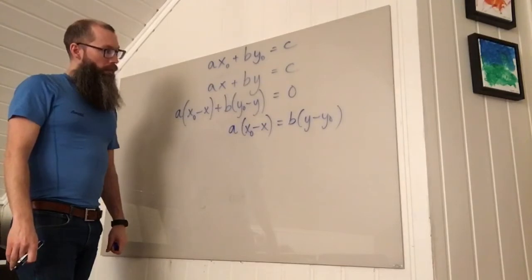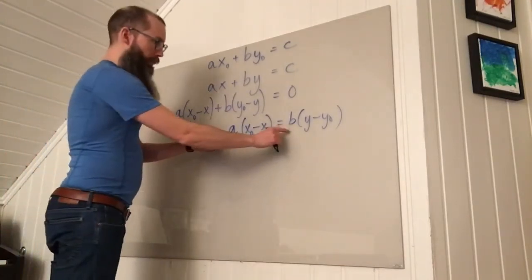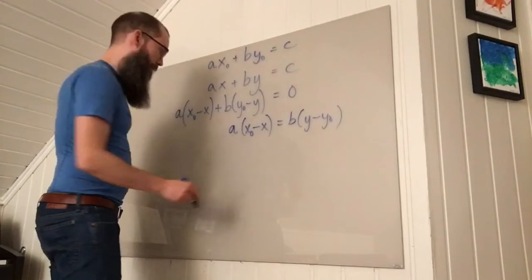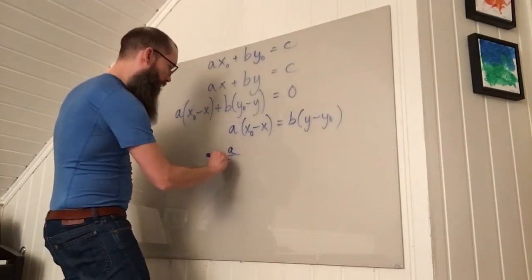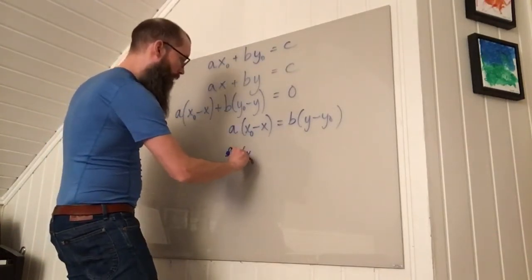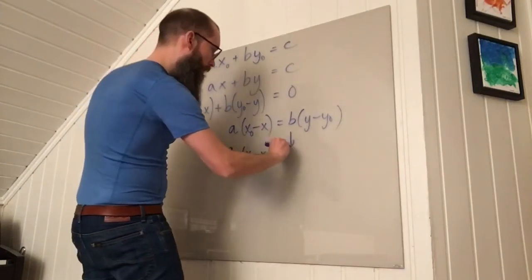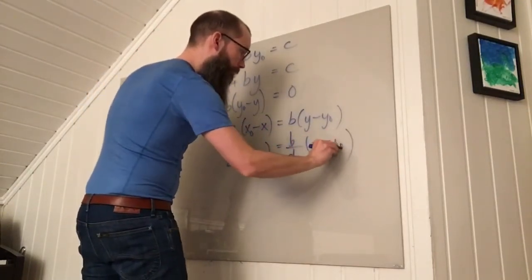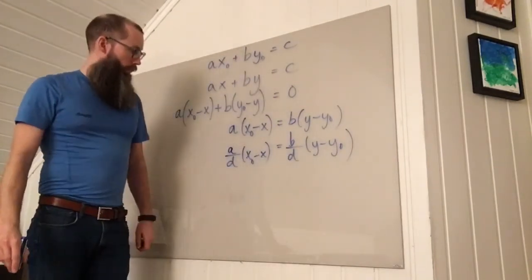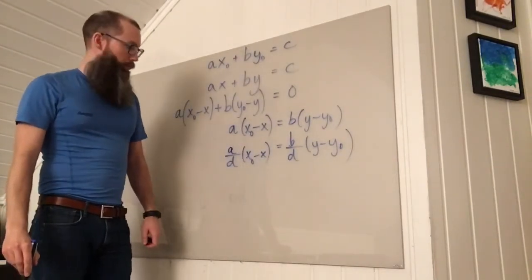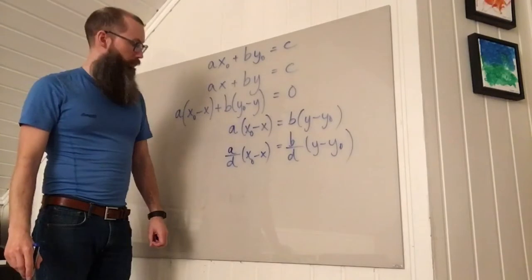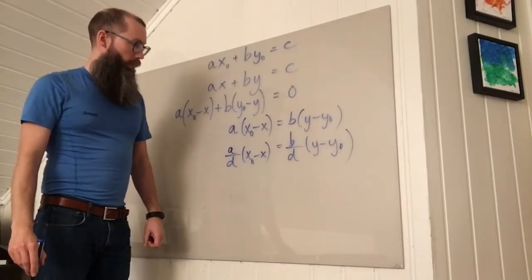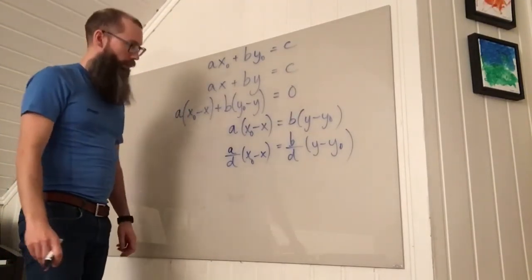Now I'll divide through by the greatest common divisor of A and B, which I have called D throughout the video. So (A divided by D) times (X0 minus X) equals (B divided by D) times (Y minus Y0). At this point I'm going to employ two of the results of the previous video, number theory 6, on coprimality.